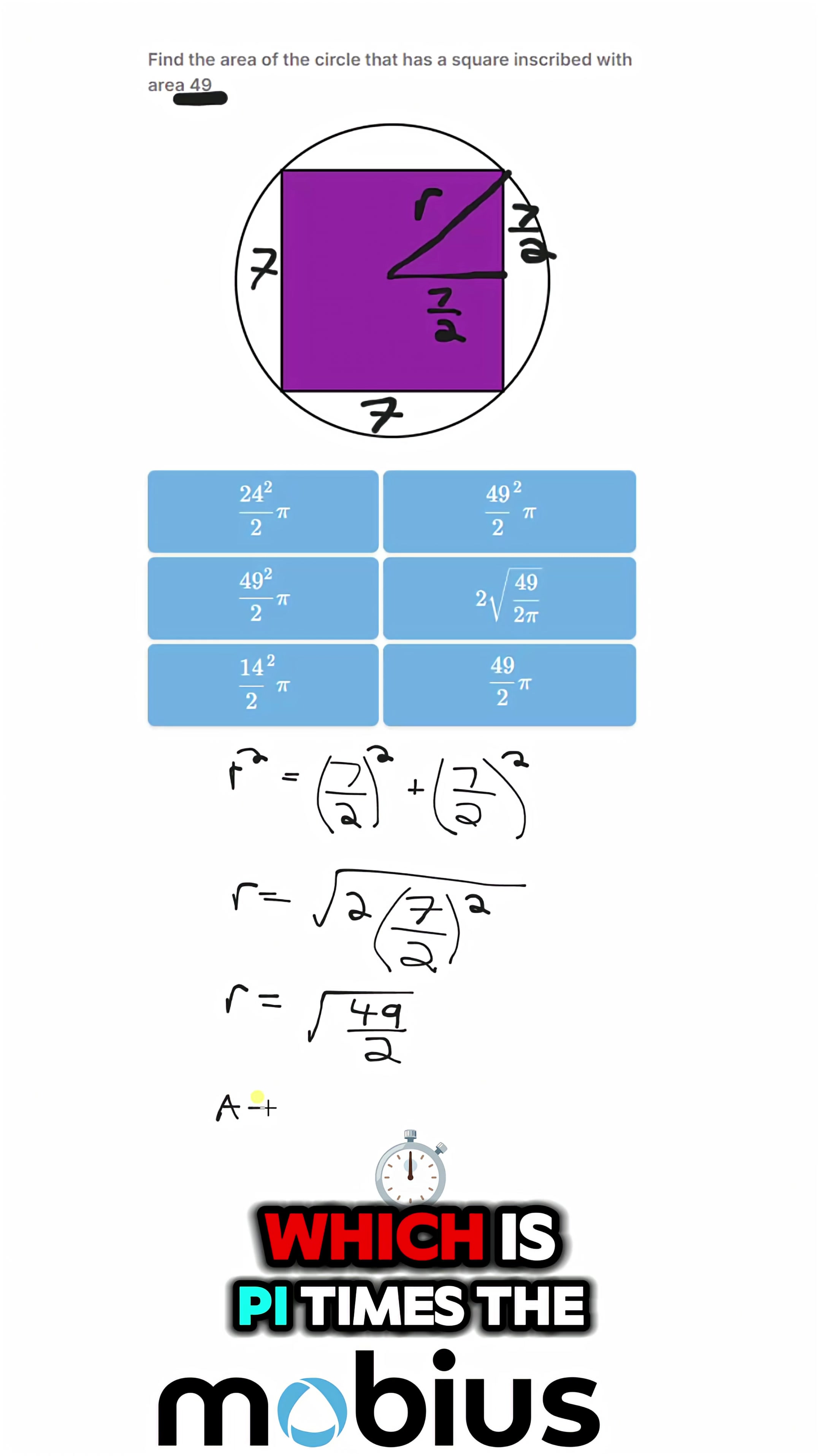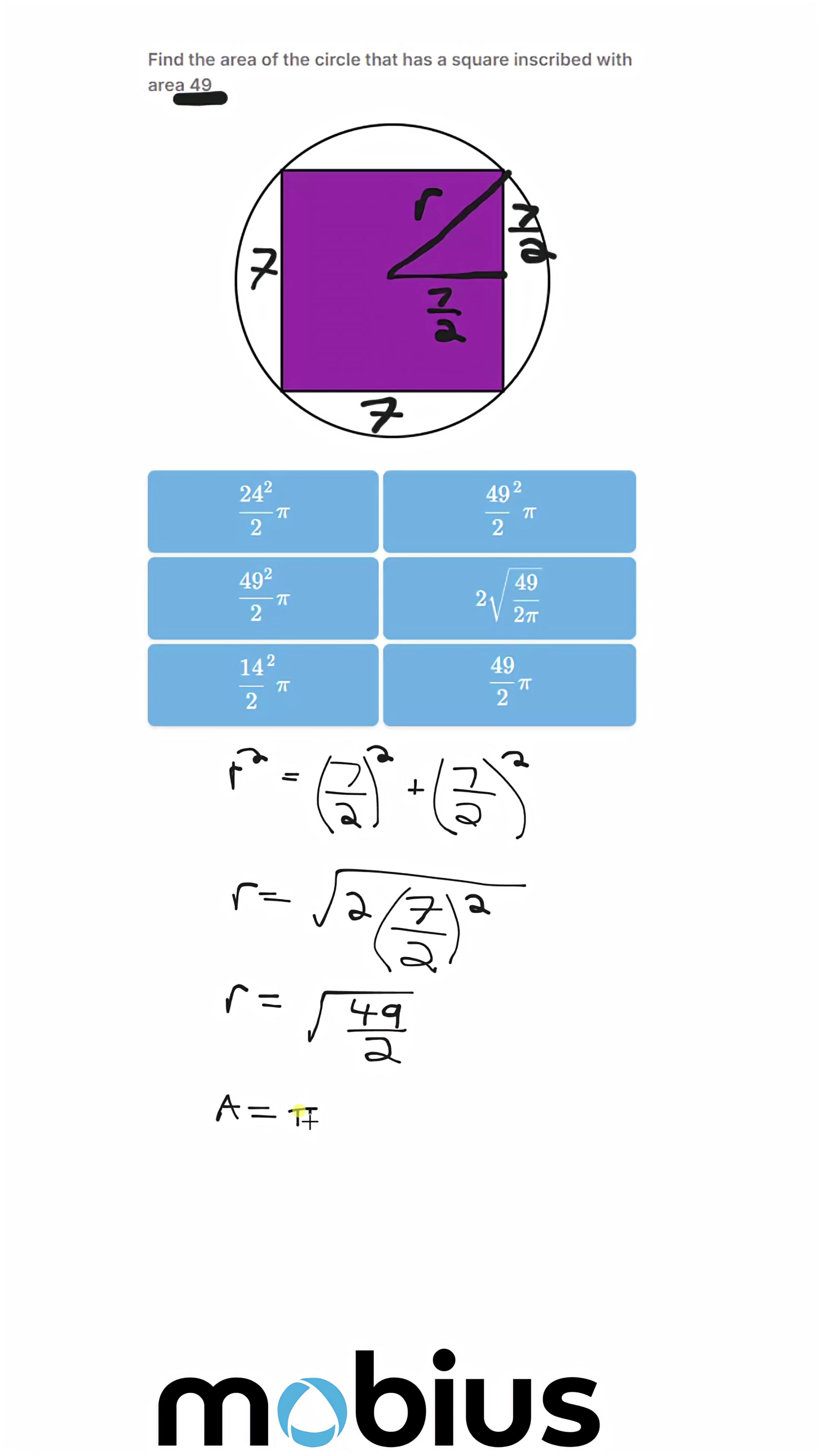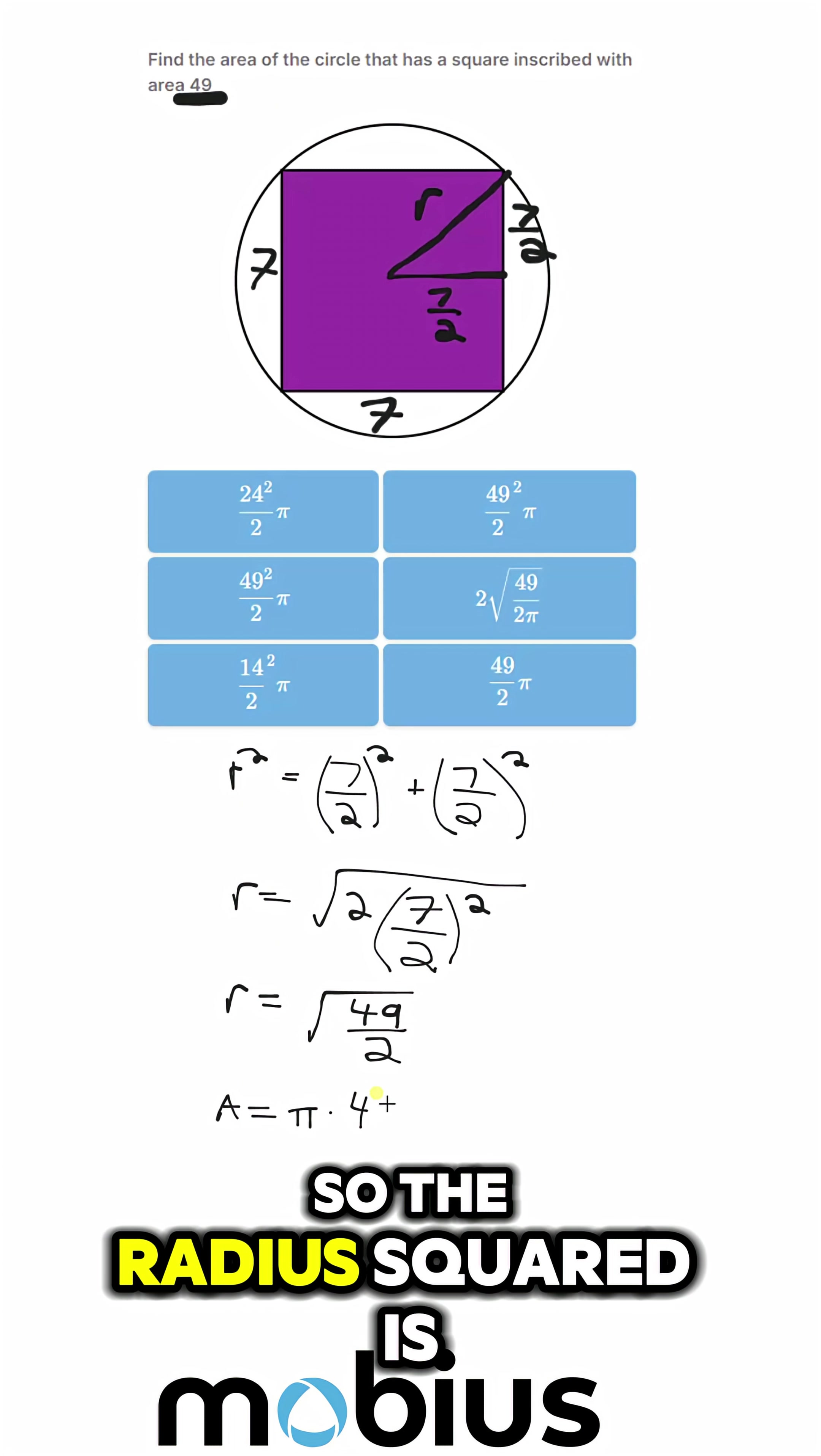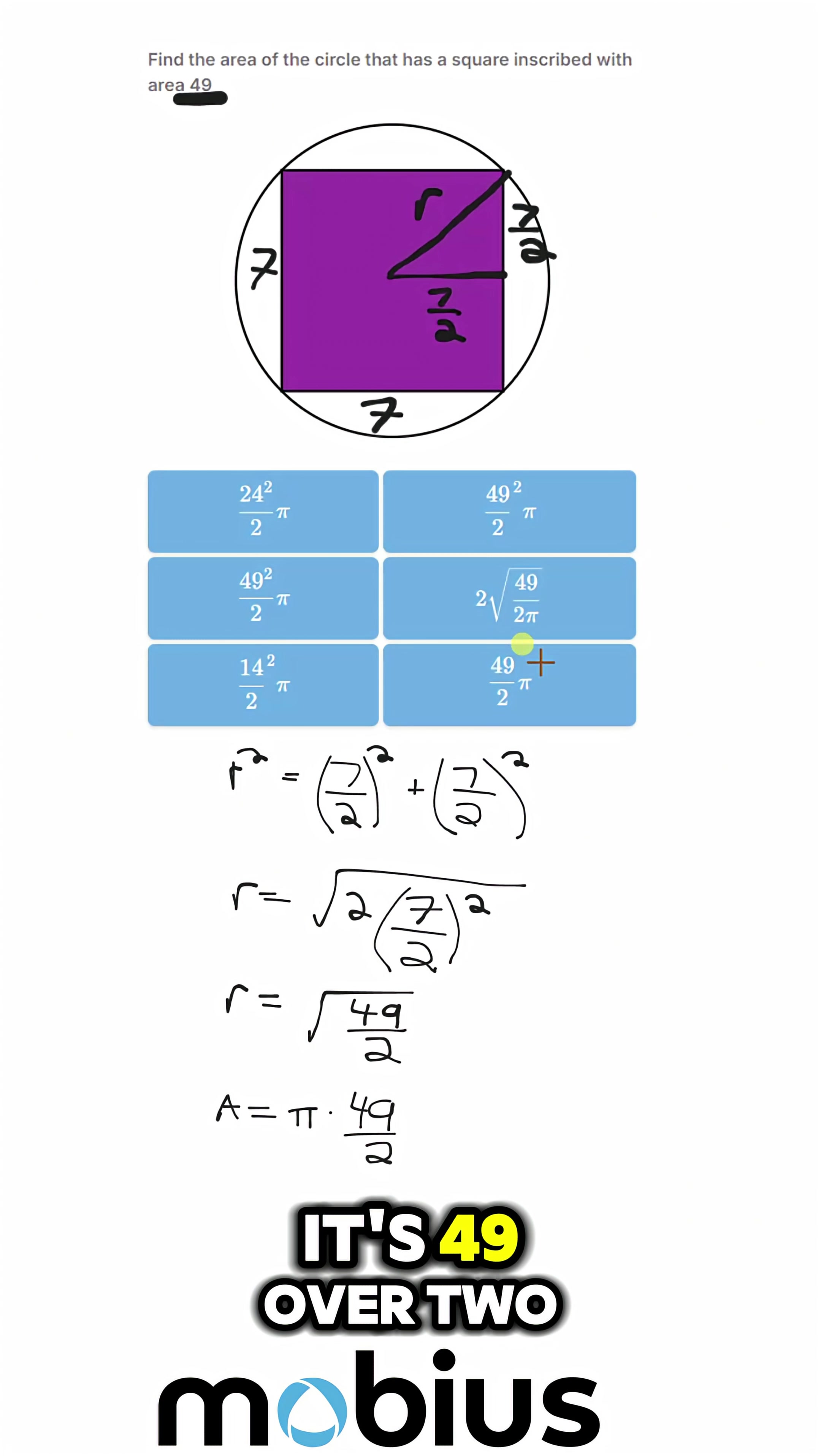And if that's our radius, then the area of the circle, which is pi times the radius squared... the radius squared is 49 over 2, so the area is 49 over 2 pi.